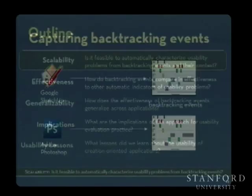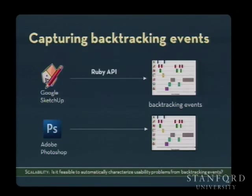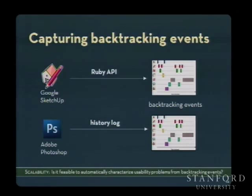To get rid of the moderator, we first need to capture backtracking events. Surprisingly, we were able to do this without modifying the source code of either application. In Google SketchUp, there's an embedded Ruby API that lets you listen for backtracking events and write a log message to a file each time one occurs. With Photoshop, it has a built-in history log that you can monitor — when an undo or erase event happens, you can record it.